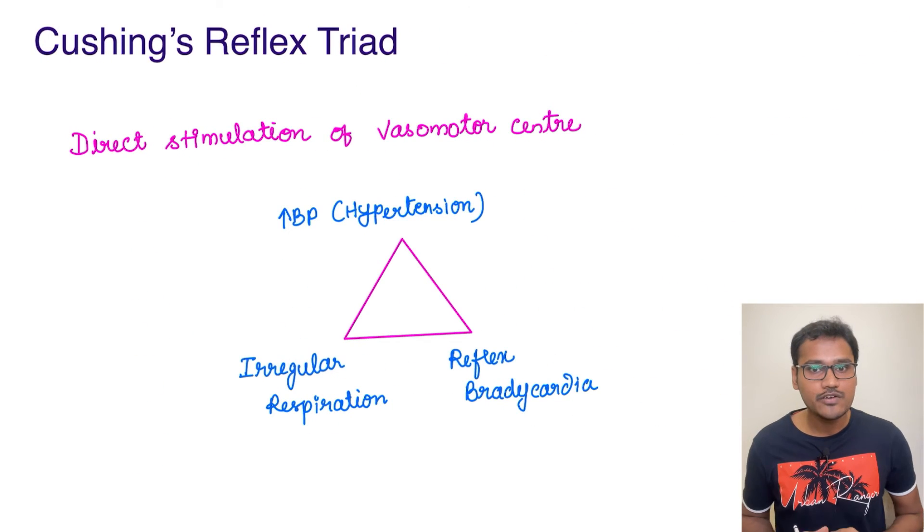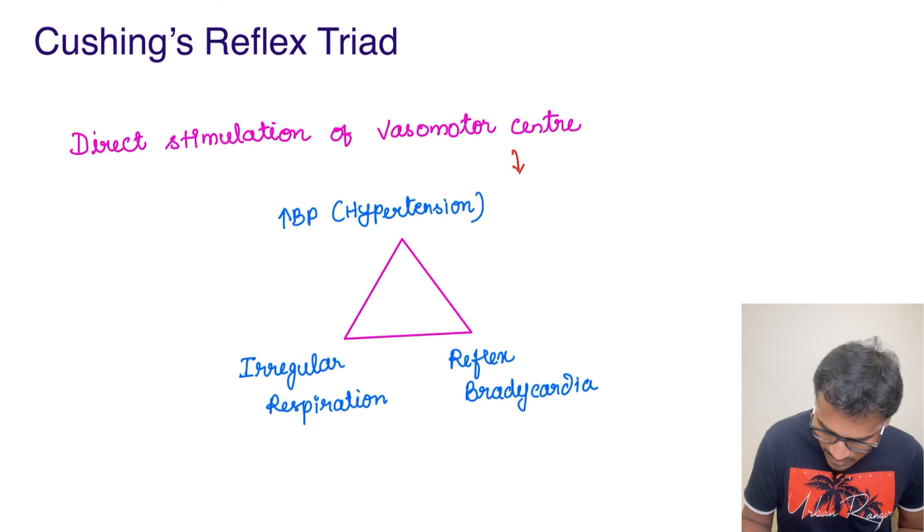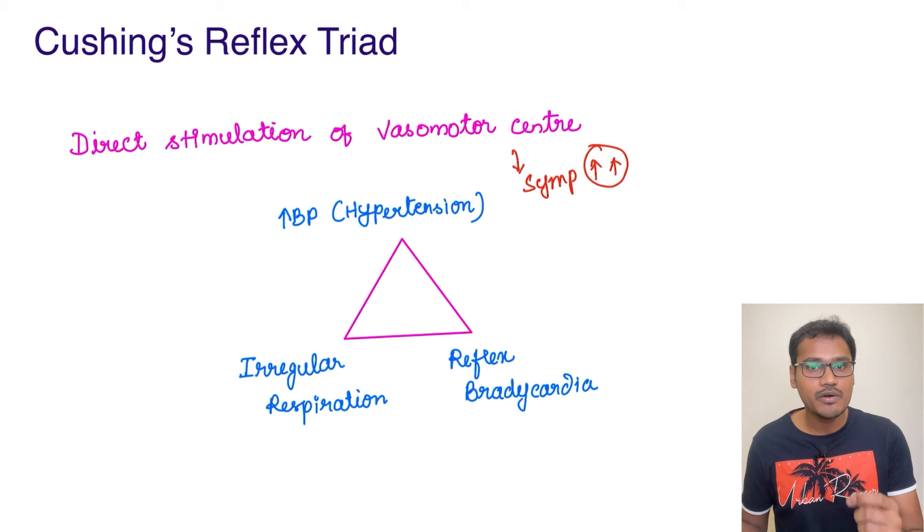It leads to a triad of symptoms because of the direct stimulation of vasomotor center. Whenever vasomotor center is directly stimulated, it is going to produce a lot of sympathetic activity. The sympathetic activity or the sympathetic system is going to increase a lot, and this will produce a severe form of hypertension. These pressures can go up to 220 mmHg also.